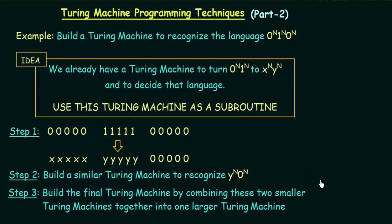This is how you can program or modify the Turing machine that you already have in order to perform some other task. What we did was use the Turing machine as a subroutine — the previous smaller Turing machine was used as a part of this larger Turing machine. We took two of those, modified them a little bit, and together they are able to perform this larger task. This is how you can program a Turing machine by using it as a subroutine to perform some larger task by combining it into a larger Turing machine. Thank you for watching.